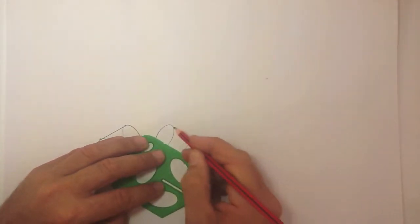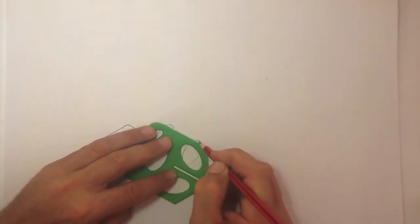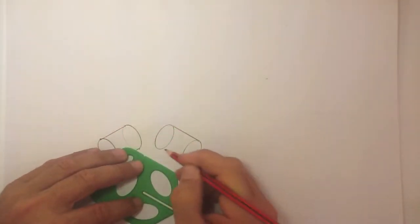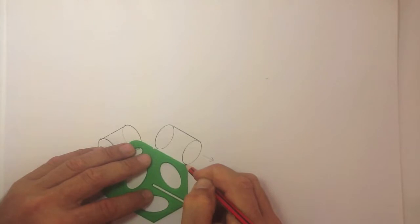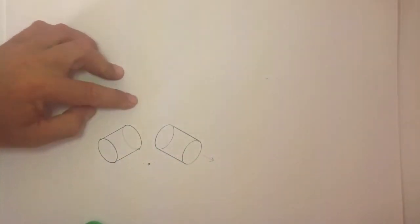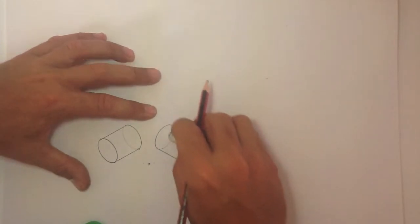Just like before, we're going to join these two points with a straight line. We're going to join these two points. And we're going to erase the lines that are hidden, which is this one.